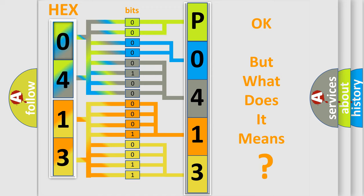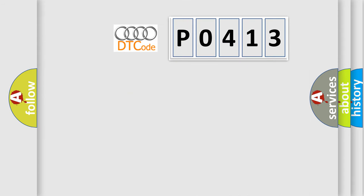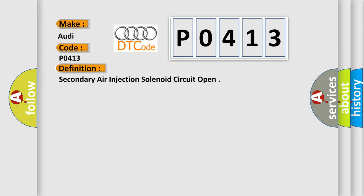We now know in what way the diagnostic tool translates the received information into a more comprehensible format. The number itself does not make sense to us if we cannot assign information about what it actually expresses. So, what does the diagnostic trouble code P0413 interpret specifically for Audi car manufacturers? The basic definition is: secondary air injection solenoid circuit open.